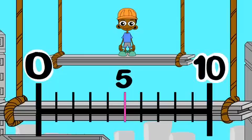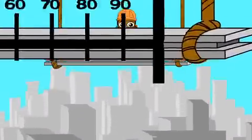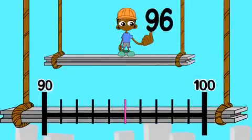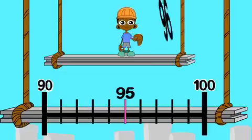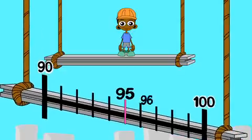And sometimes the nearest 10 is 100. Look at 96. The benchmarks are 90 and 100. The midpoint is 95. 96 is greater than 95. So, to the nearest 10, 96 rounds up to 100.